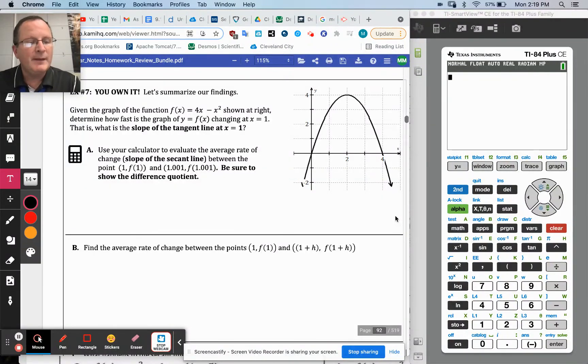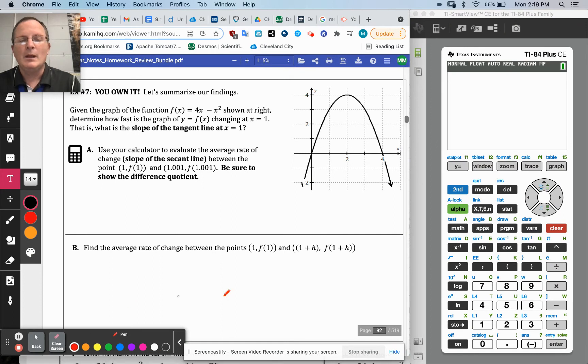Okay, so example 7. It says, let's summarize our findings. Given the graph of the function f(x) = 4x - x² shown at the right, to determine how fast the graph is changing when x equals 1. Well, that's another way of saying what is the instantaneous rate of change, and that is another way of saying what is the slope of the tangent line, and that is another way of saying what is the derivative when x equals 1. These are all the same thing.